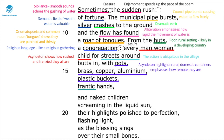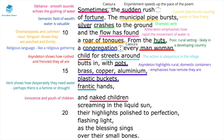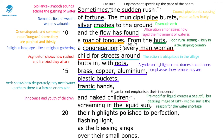They are described as having 'frantic hands,' and this adjective shows how desperately they need water, perhaps as a famine or drought has caused the lack of it. In the final verse, the description of naked children emphasises our attention on the innocence and youth of the children within this village. The enjambement gives a form of pause that further emphasises their innocence. In line 19, 'screaming in the liquid sun' — the pre-modifier 'liquid' creates a beautiful, dazzling image of light, yet the sun, however beautiful, is one of the major reasons for the water shortages that have dried everything out.